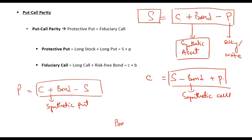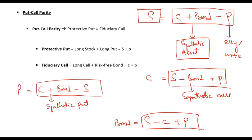Or I can make bond the subject, so it will be asset minus call option plus put option. This is known as synthetic bond. If you know this equation — that protective put equals fiduciary call — you should be able to derive all of these.